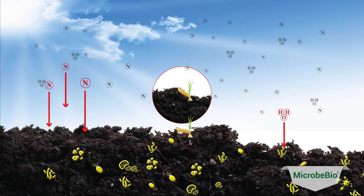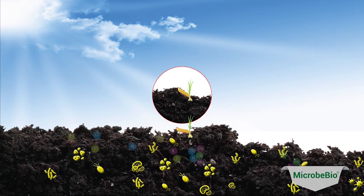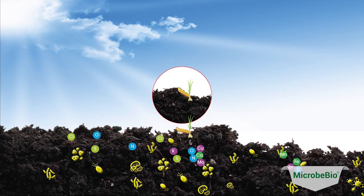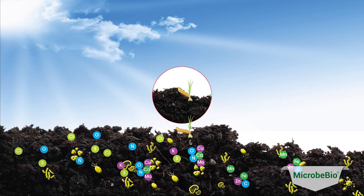Beneficial soil microbes, along with certain plant roots, take the nitrogen found in the air and convert it into a form that plants can use and uptake. Soil that has been amended by MicroBio products increases the organic matter, allowing the plant to receive more nutrients.